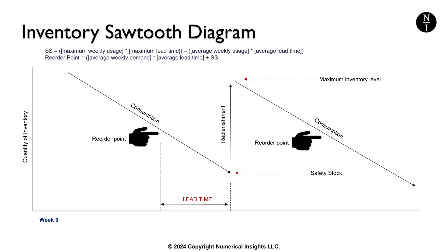The Sawtooth Diagram is a graphical representation of inventory stock levels over time. It demonstrates how inventory is replenished and consumed, providing insights into inventory dynamics in a simple visual format.